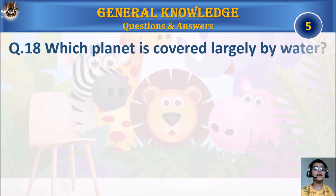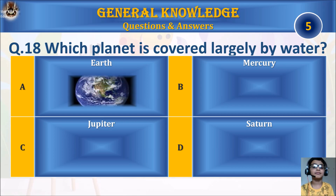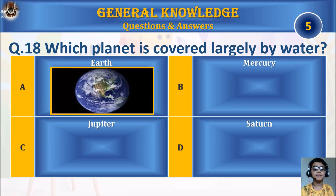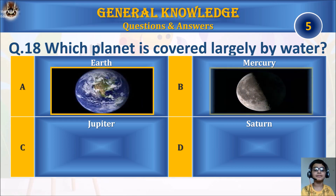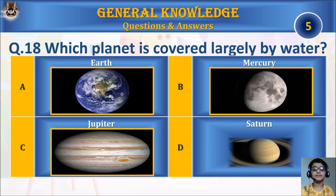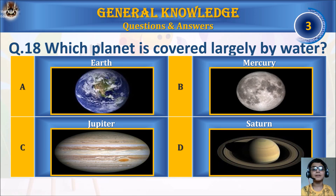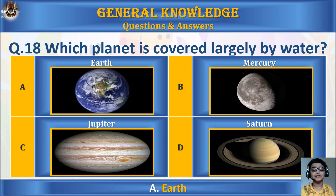Question 18: Which planet is covered largely by water? A. Earth, B. Mercury, C. Jupiter, or D. Saturn? Your time starts. The answer is A. Earth.